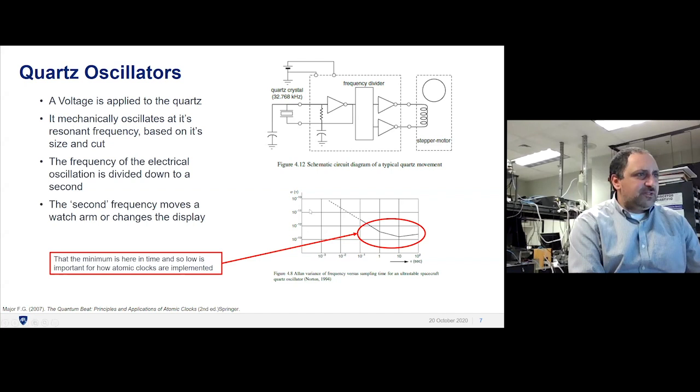With the Allen variance, this is a really fancy quartz oscillator for space. At 10 seconds, it's gone off by one part in a millionth of a billionth, which is really good. But when you go up higher in time, it shoots back up. That's why it's not a fundamental thing. The size of a piece of quartz isn't fundamental. We want to define time in terms of something fundamental.